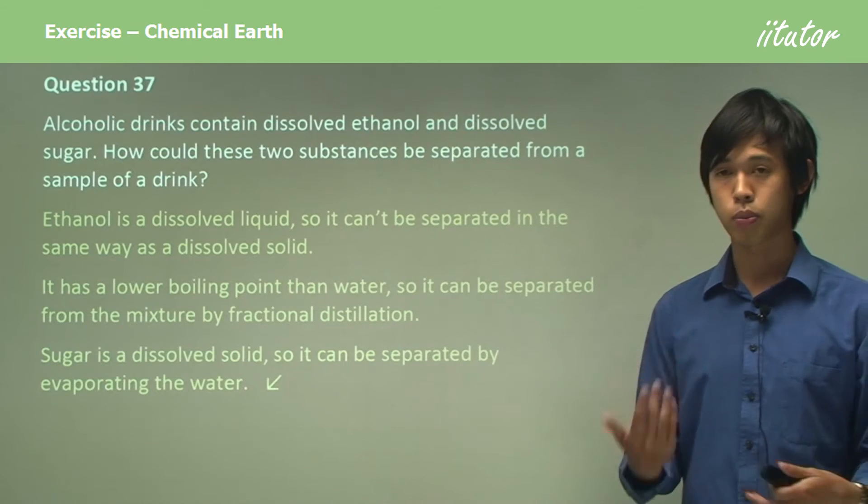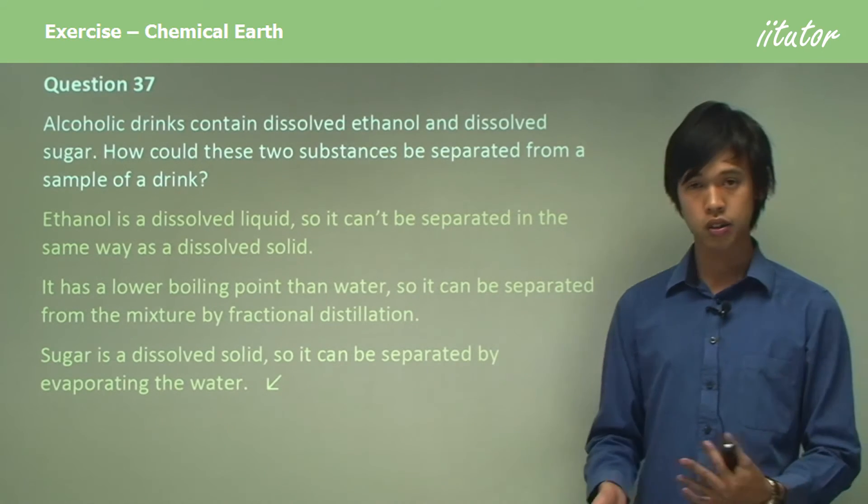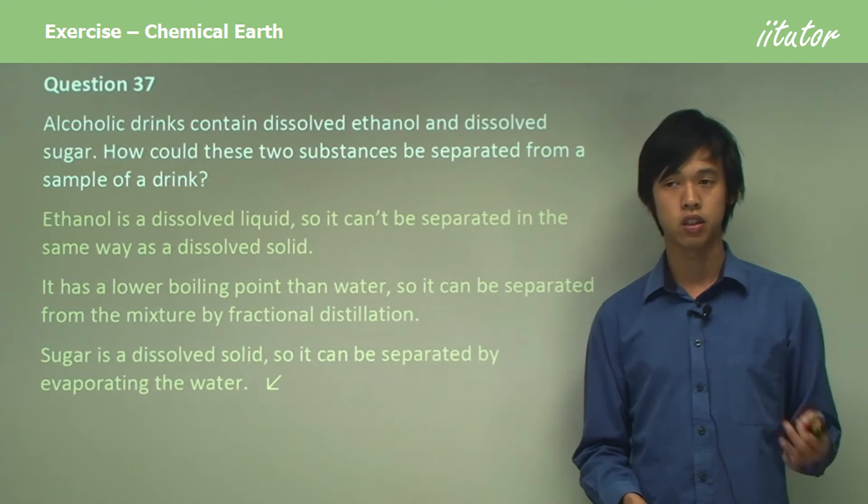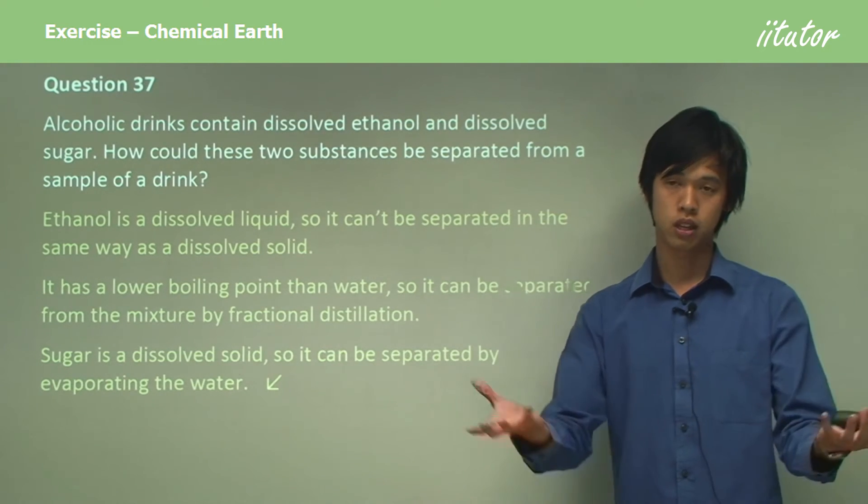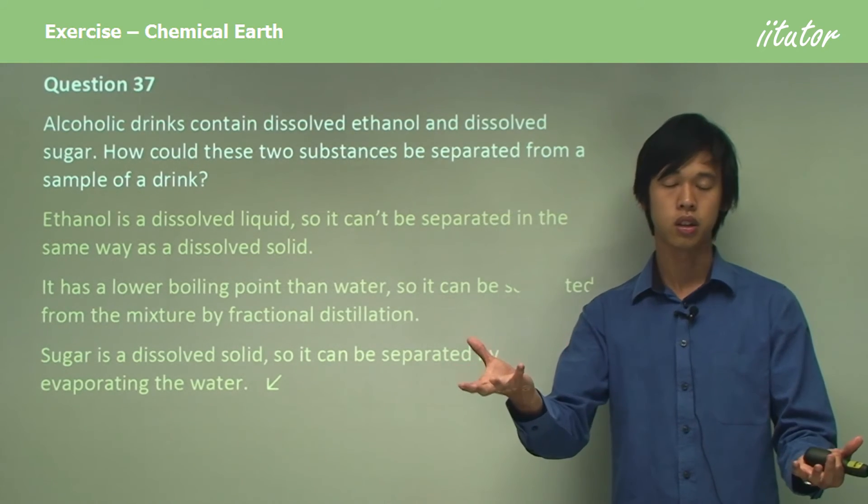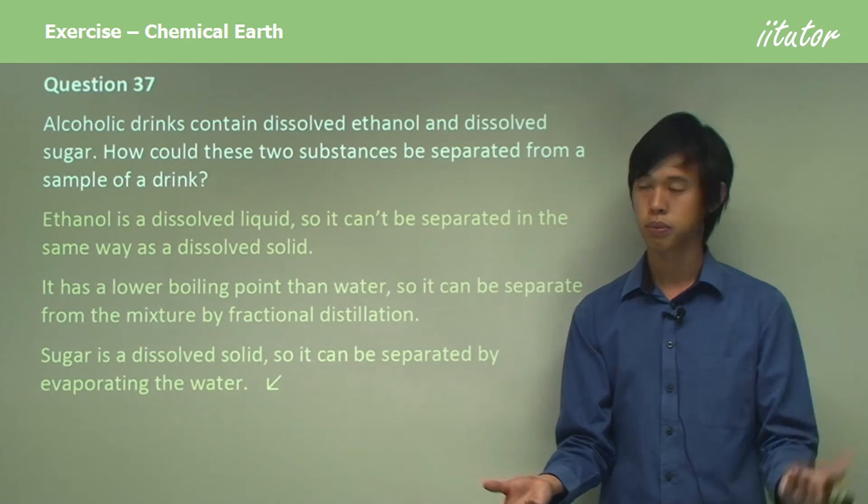So first thing is to distill the ethanol out, then following the distillation of ethanol, then you can just evaporate the water, and you'll get the sugar. Then you've separated the ethanol, or alcohol, and the sugar.